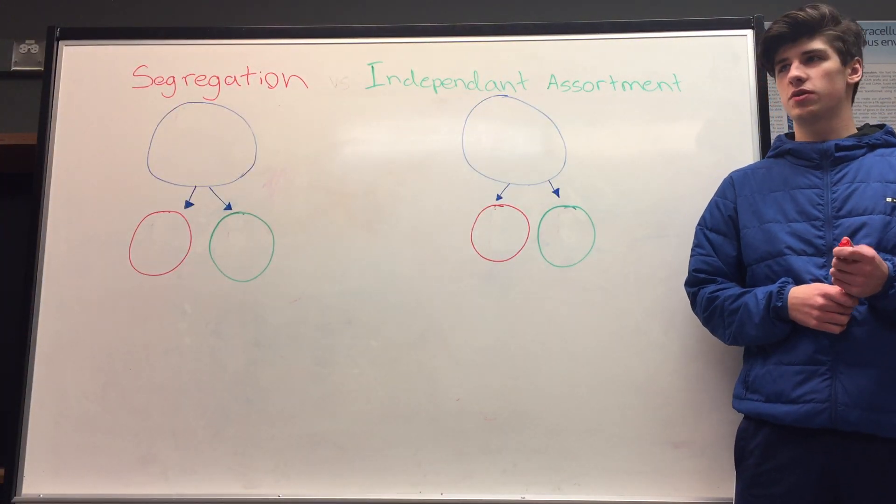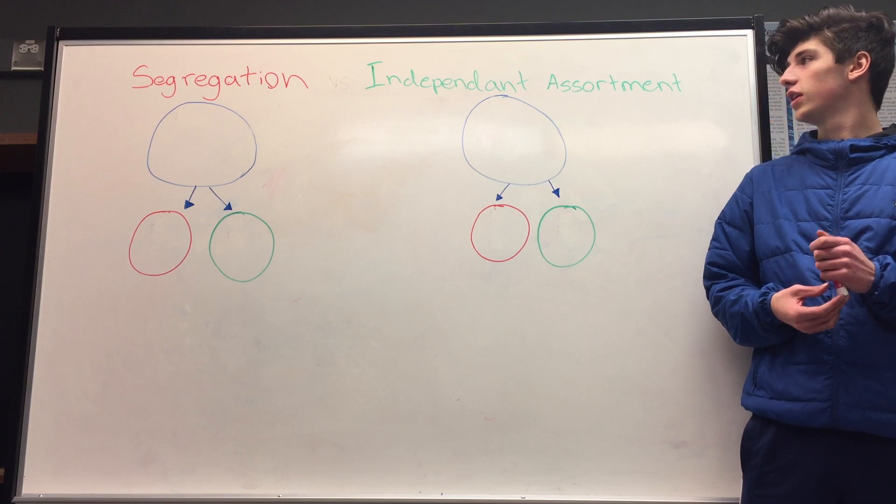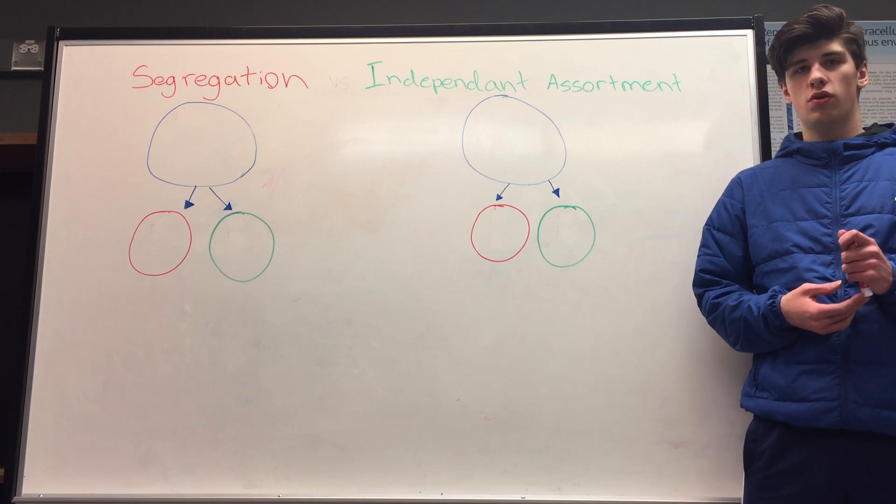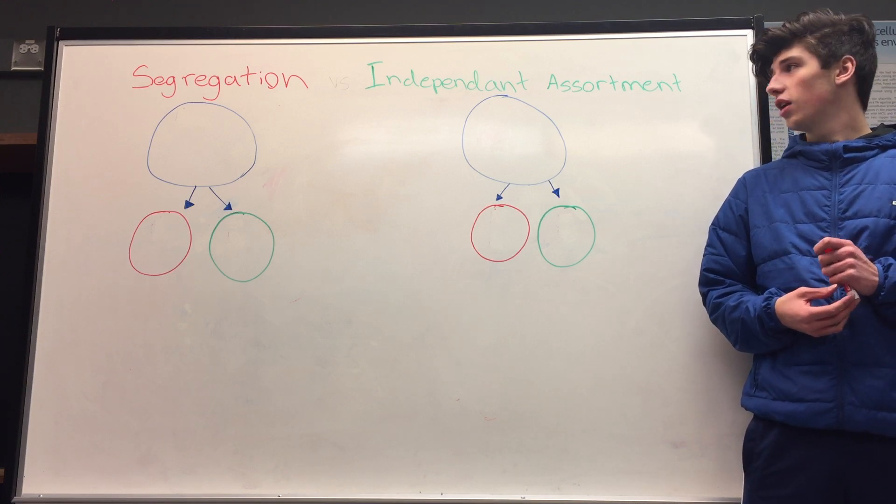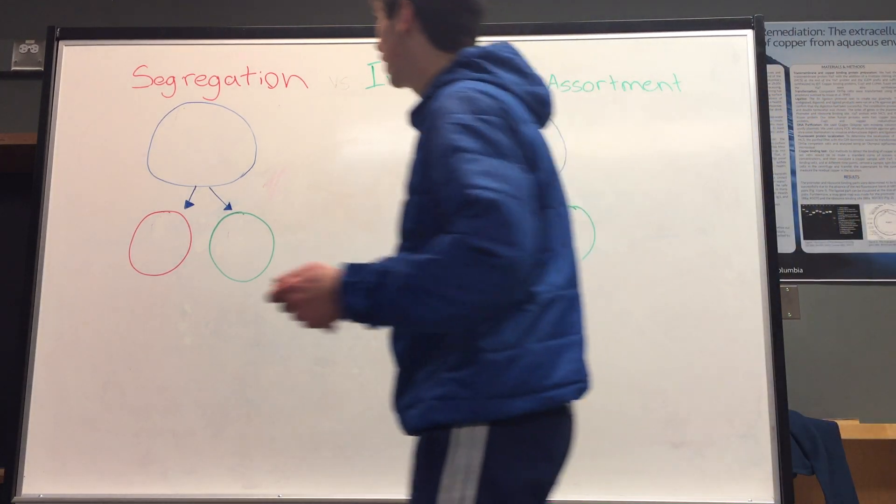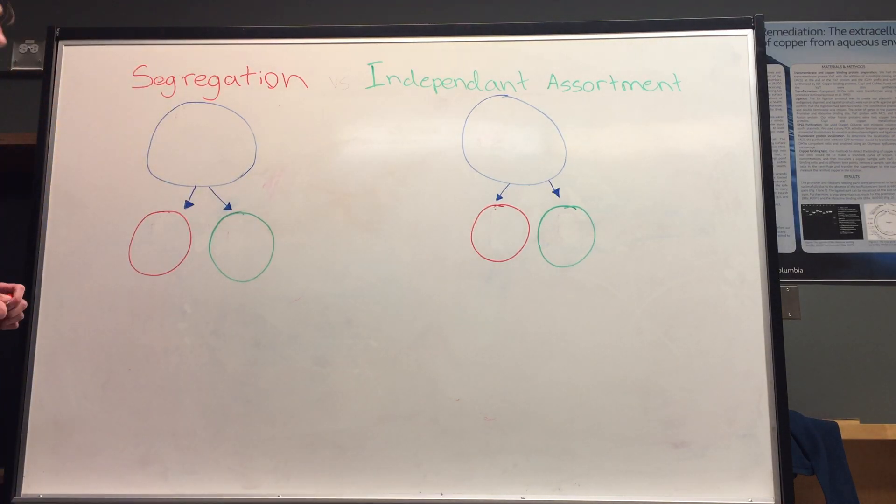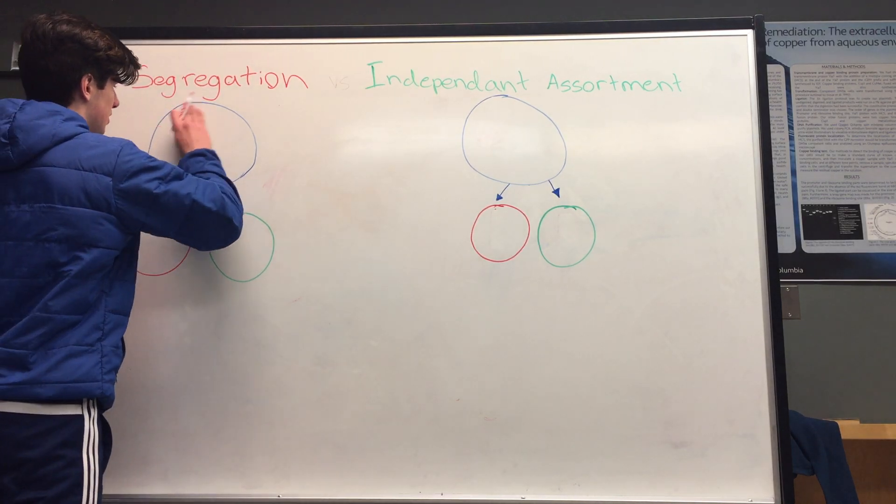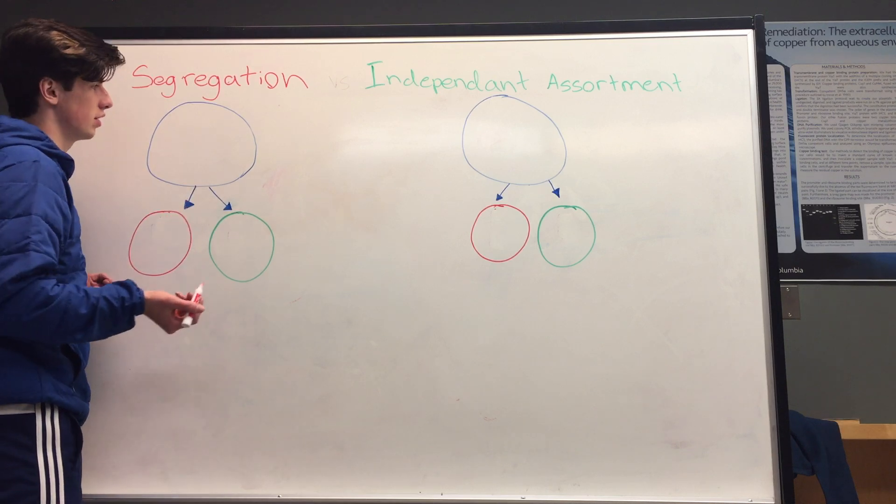In this video we're going to cover transmission genetics and specifically two terms or concepts that get mixed up pretty often: segregation and independent assortment. So segregation is essentially just stating that an organism for a specific characteristic has two alleles.